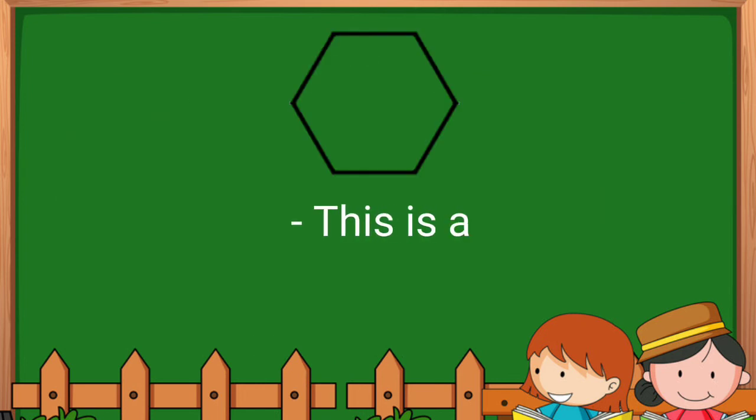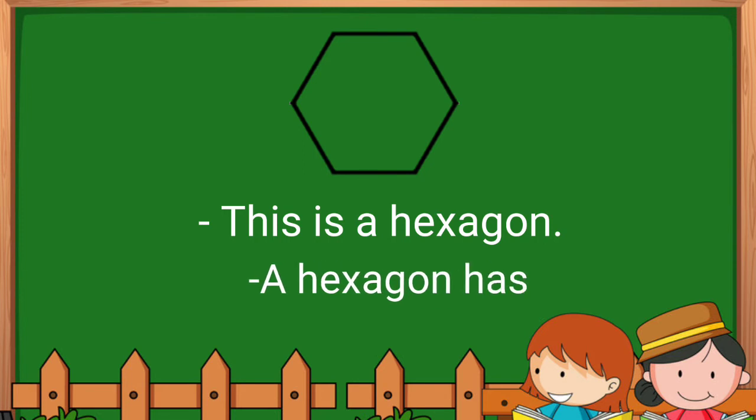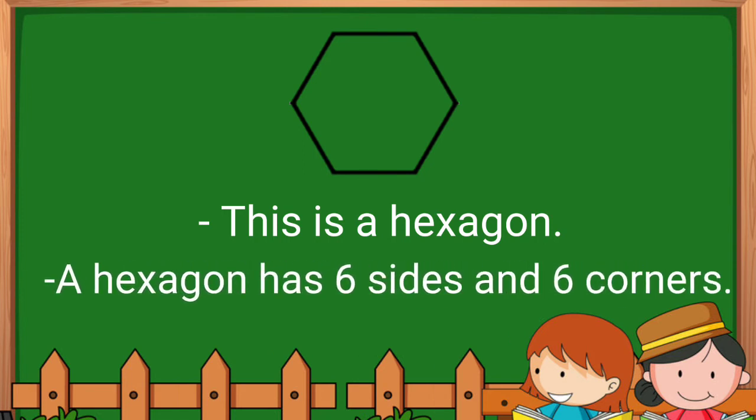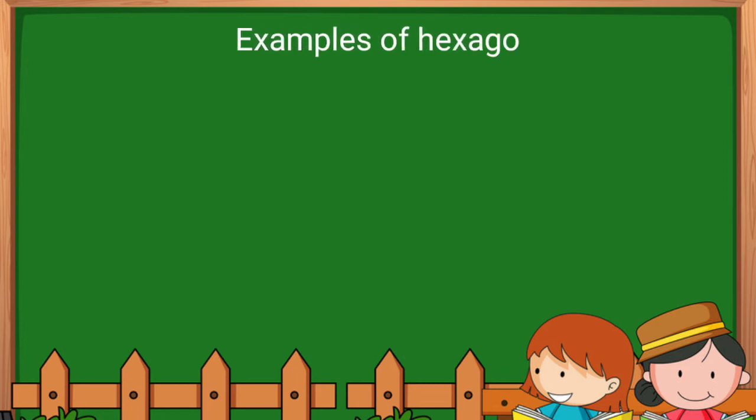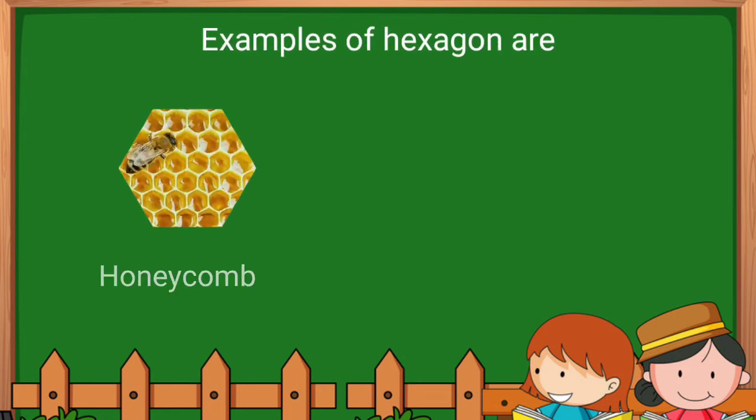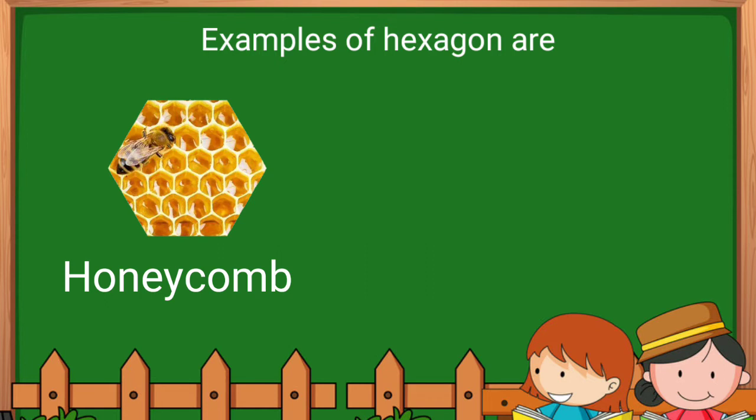Hexagon. This is a hexagon. A hexagon has six sides and six corners. Let's count: one, two, three, four, five, six - six sides. Examples of hexagon are honeycomb, nut.